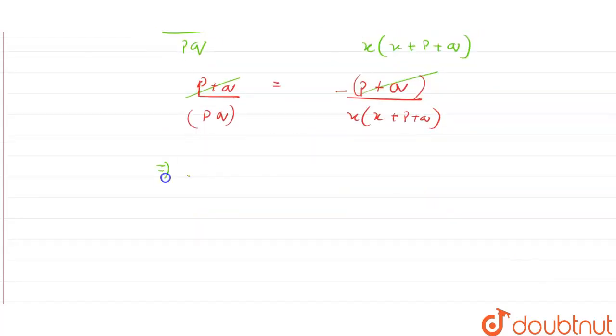So this will be 1/pq equals minus 1 divided by x times (x + p + q).